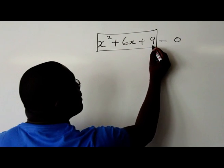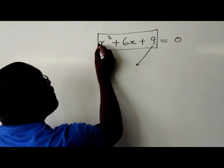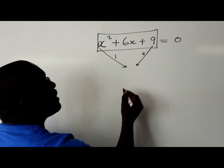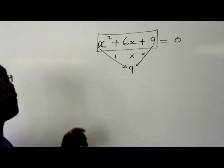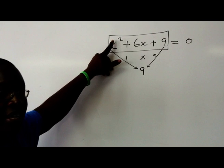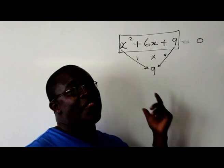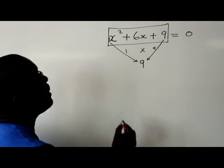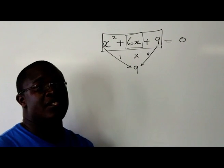What we're going to do is look at 9. Remember that the coefficient of x² is 1, so this is 1 and this is 9. We're saying 1 times 9, your answer is 9. So the product of the independent term and the coefficient of x squared is equal to 9. Now we ask ourselves: which are the factors of 9? We want to split the 6x and express it in terms of factors of 9.